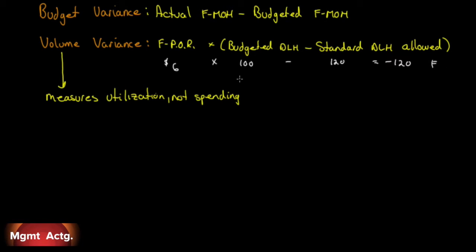Now let's assume instead we budgeted for 100 hours but should have only used 80. So 100 minus 80 is positive 20, times $6 is $120. We should have applied $600 based on our budget, but based on actual output we were only capable of applying $480 instead of $600. So we're under-applied by $120, which is unfavorable.